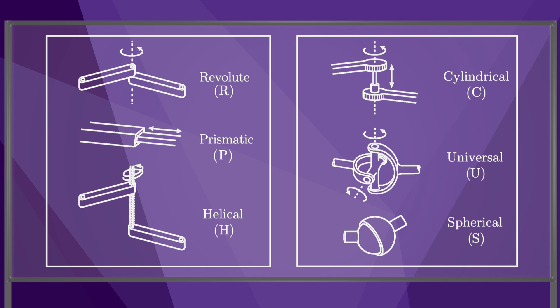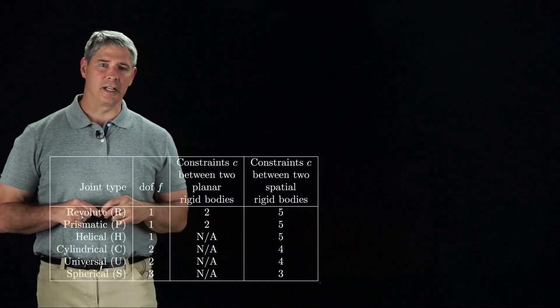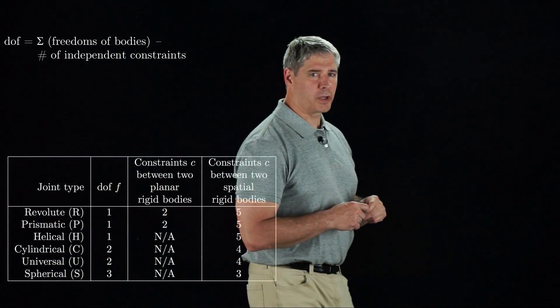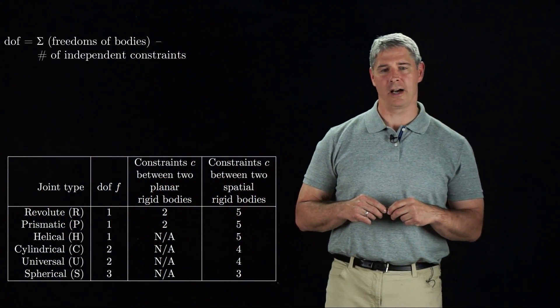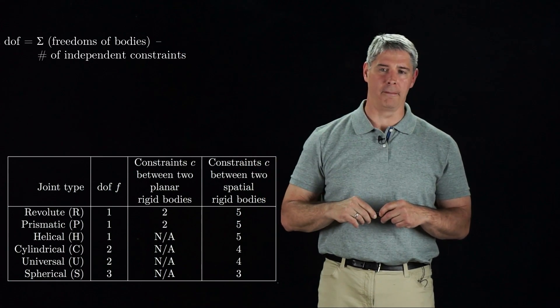This table summarizes the previous four joints, plus two other types of joints: the one degree of freedom helical joint, and the two degree of freedom cylindrical joint. This table shows the number of degrees of freedom of each joint, or equivalently, the number of constraints between planar and spatial bodies. Using this table of freedoms and constraints provided by joints, we can come up with a simple expression to count the degrees of freedom of most robots, using our formula from Chapter 2.1.